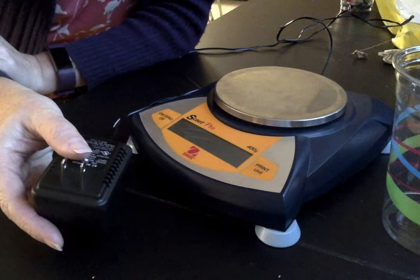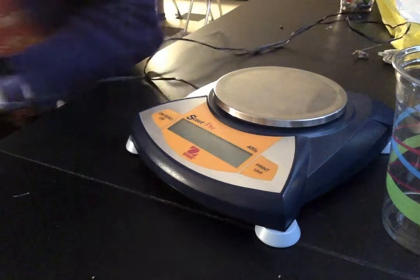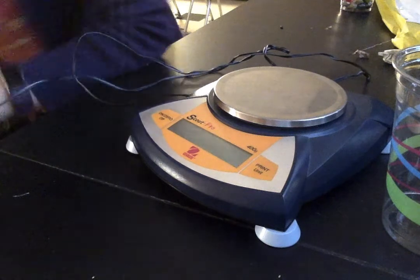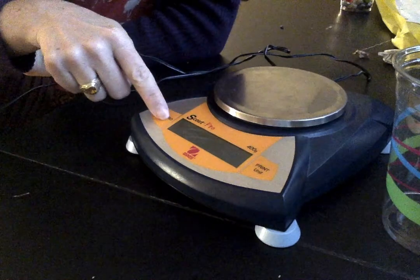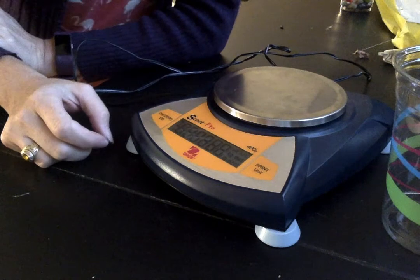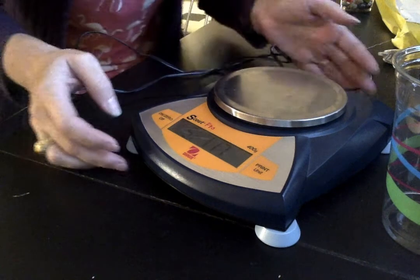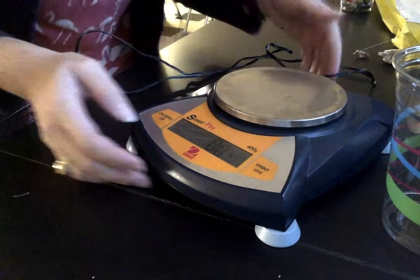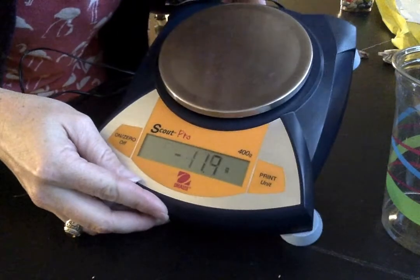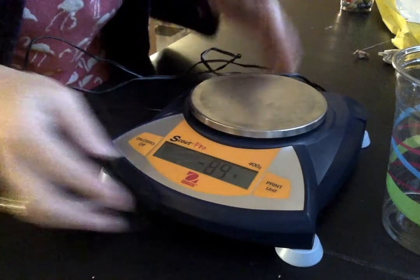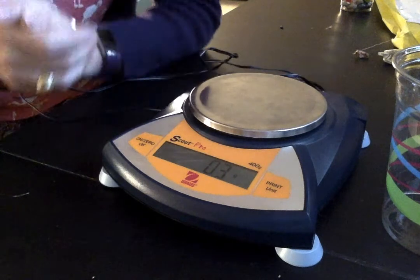First, you have to plug an electronic balance in. Then you turn it on, and you have to give it a second. You'll see eventually when it turns on, it shows you a mass typically of zero grams if you're not moving it around.